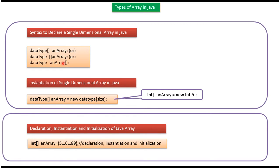Here you can see how to declare a single dimensional array. The syntax uses the data type, square bracket, and the variable name. You can place the square bracket either after the data type or after the variable name.